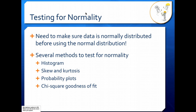You need to make sure your data is normally distributed before you use the normal distribution to do ANOVA or a t-test, anything like that. There are several methods to test for normality. You can use a histogram, you can look at skew and kurtosis, you can use probability plots, or you can use the chi-square goodness of fit. Let's look at all of those in more detail.